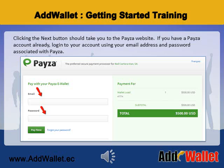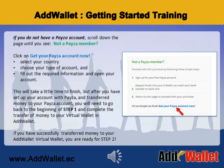Clicking the Next button should take you to the PESA website. If you have a PESA account already, log in to your account using your email address and password associated with PESA. If you do not have a PESA account, scroll down the page until you see 'Not a PESA Member.' Click on 'Get Your PESA Account Now.' You will then select your country, choose your type of account, and fill out the required information and open your account. This will take a little time to finish, but after you have set up your account with PESA and transferred money to your PESA account, you will need to go back to the beginning of Step 1 and complete the transfer of money to your virtual wallet in AdWallet.